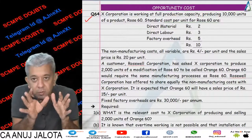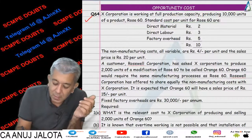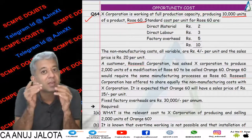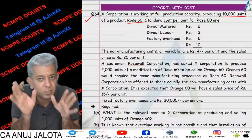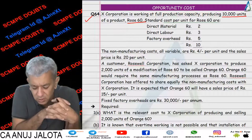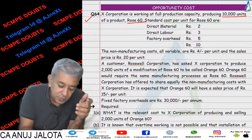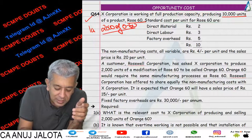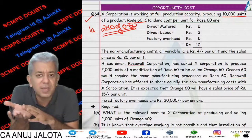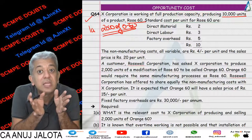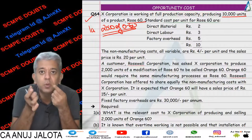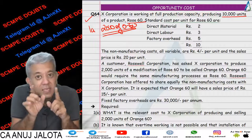Now let me explain you a few of the things. Our maximum capacity was 10,000 units of row 60 and that is what we were trying to be using also. We had capacity of 10,000 and we were using that capacity. In part 1A, we got an offer of 2,000 units of orange 60. In case we wish to be making it, we don't have any spare capacity. So therefore we need to be sacrificing 2,000 units of row 60 to be making 2,000 units of orange 60. Hence there is opportunity cost.